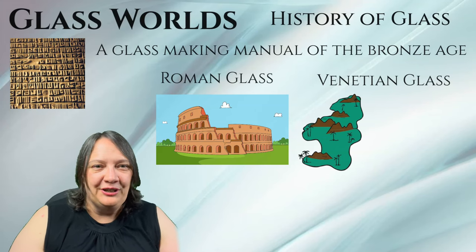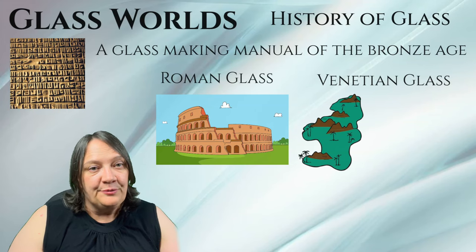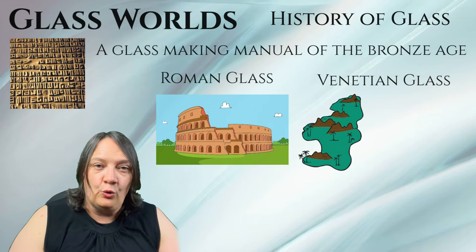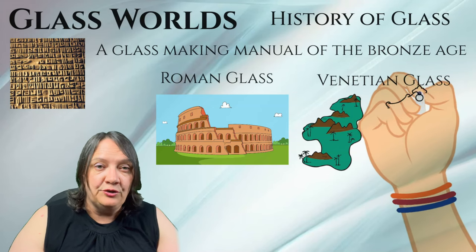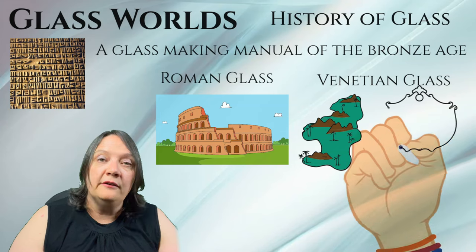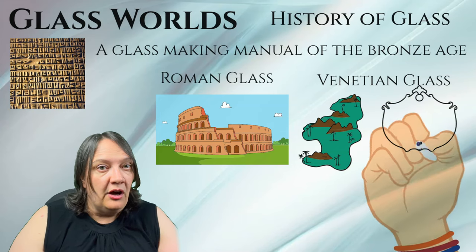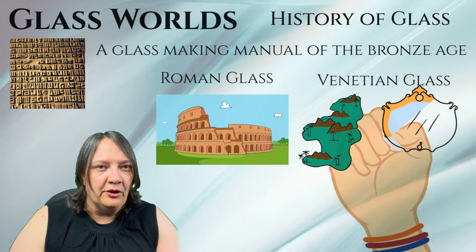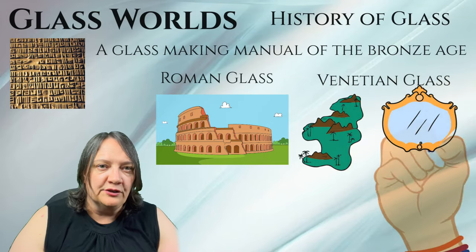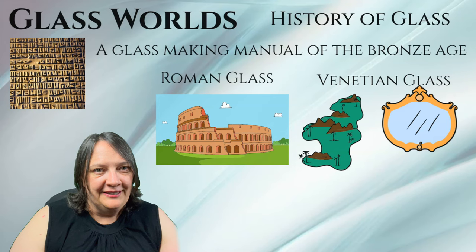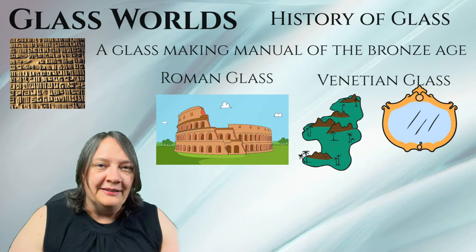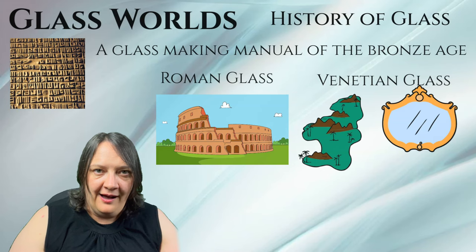Murano became the center of the Venetian glassmaking industry, and the glass produced there was known for its exceptional quality and craftsmanship. Venetian glassmakers were renowned for their skill in creating delicate, intricate and colorful works of art, and for their work with mirrors. The secrets of the trade were closely guarded, and glassmakers were forbidden by law from leaving the island to prevent the spread of their knowledge and techniques.